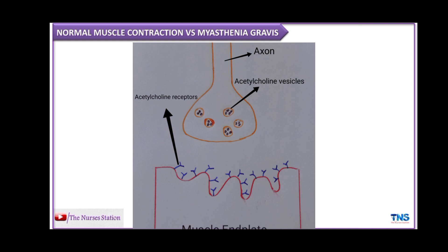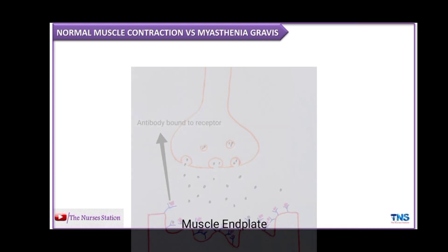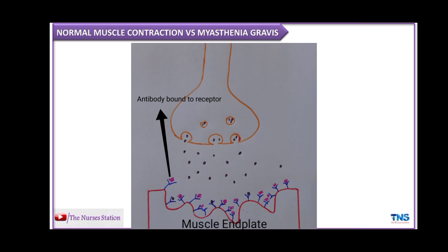Now, what is the difference between normal muscle contraction and myasthenia gravis? Normally, when the action potential travels through the axon, it reaches the nerve terminal and causes the release of acetylcholine from the vesicles into the neuromuscular junction. The acetylcholine binds to acetylcholine receptors on the muscle end plate and causes contraction. But in myasthenia gravis, autoantibodies directed at the acetylcholine receptors bind to those receptors and make them unavailable to bind with acetylcholine, resulting in weakness of muscle contraction and generalized muscle weakness.